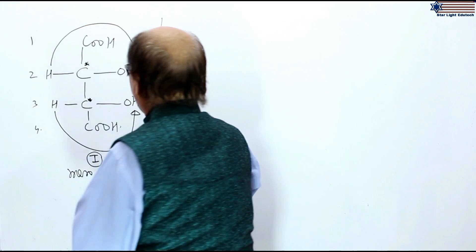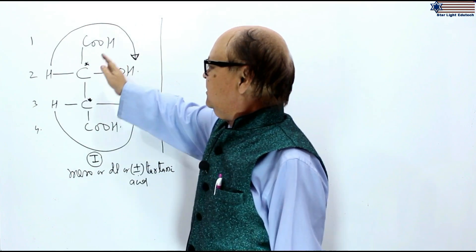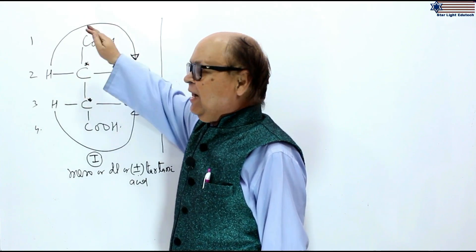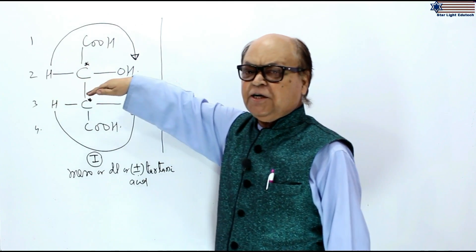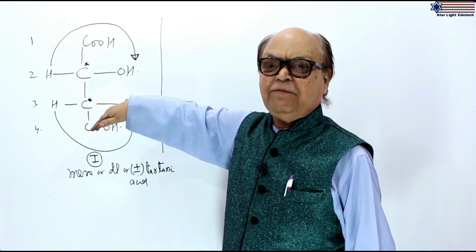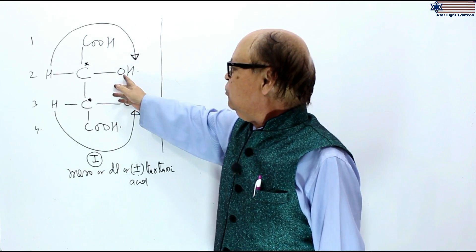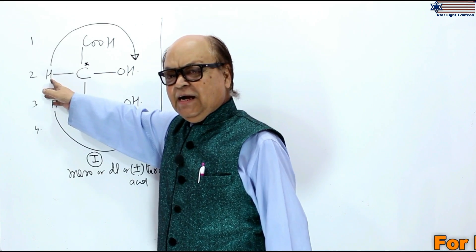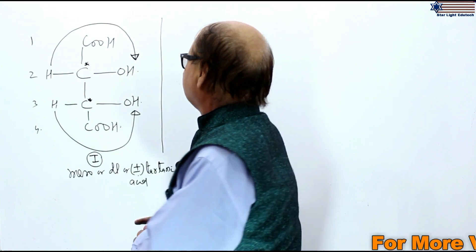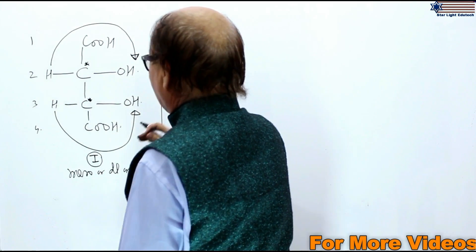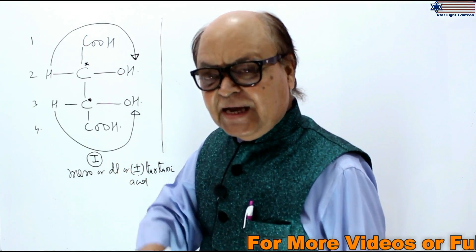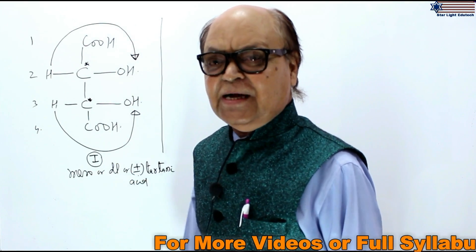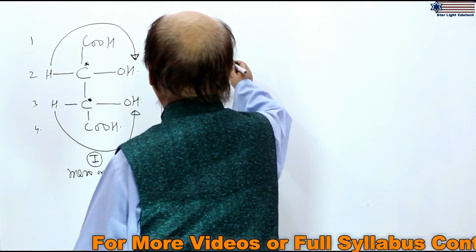Now what we will do? We will change the configuration at carbon number 2, and the configuration at the other chiral carbon atom will remain as such. That is, OH will be taken to the left-hand side and H will be taken to the right-hand side in this way. And thus we will get the second optical isomer of tartaric acid.